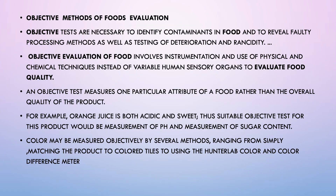Now let us talk about the objective methods of food evaluation. Objective evaluation of food involves instrumentation and use of physical and chemical techniques, instead of variable human sensory organs, to evaluate food quality. An objective test measures one particular attribute of a food rather than the overall quality of the product. For example, orange juice is both acidic and sweet; thus, suitable objective tests for this product would be measurement of pH and measurement of sugar content.